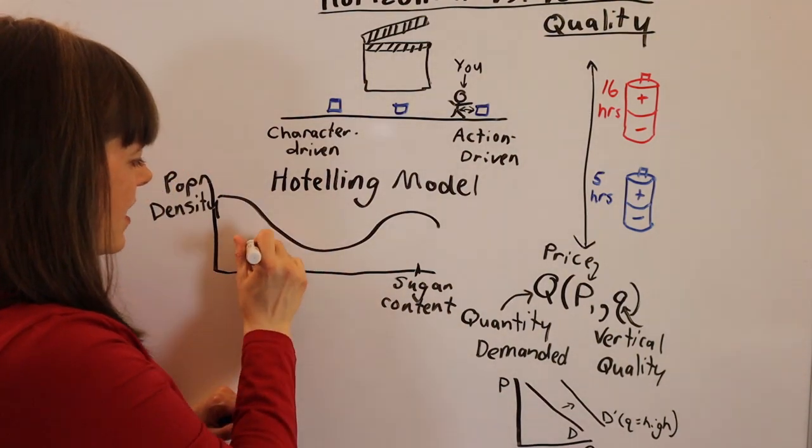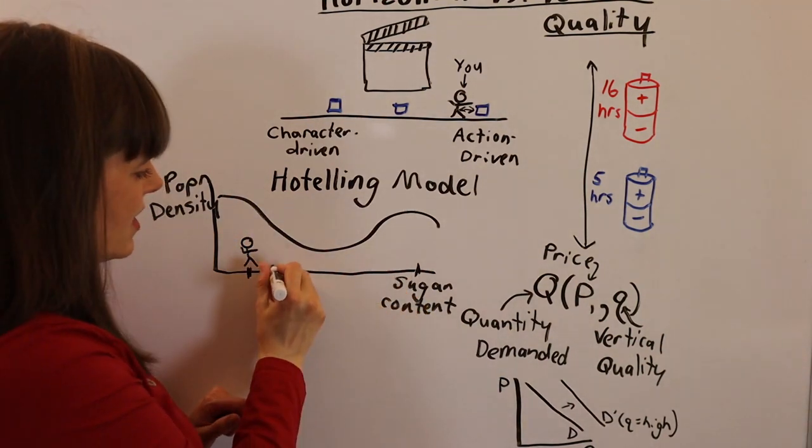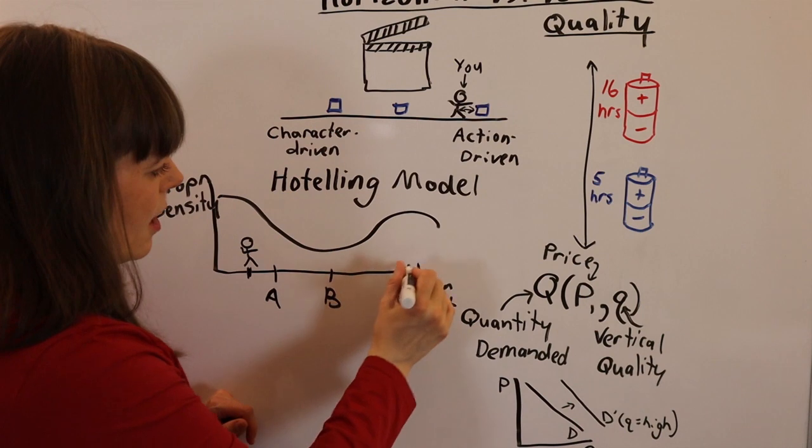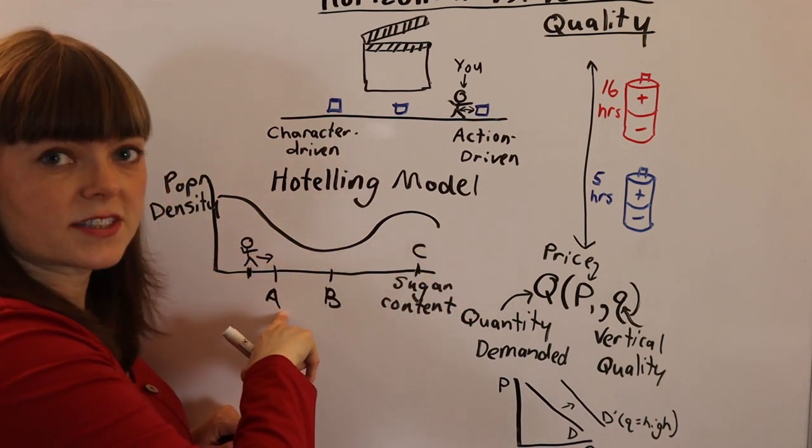You can think of this as there's like a single person here. If the three options for tea are option A, option B, and option C, this person obviously is going to choose this tea level.